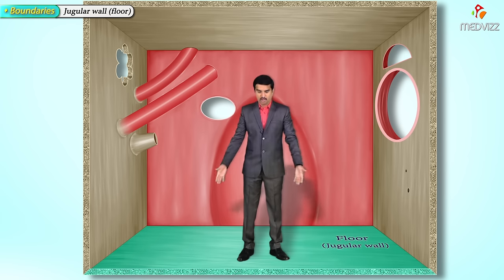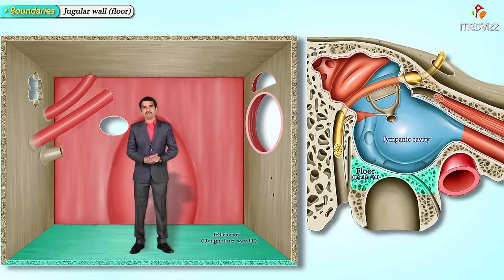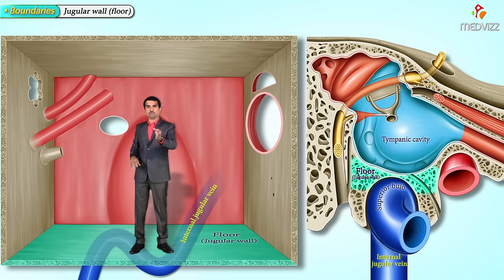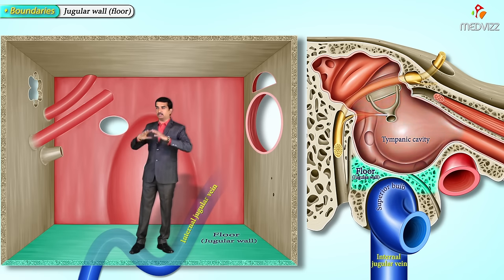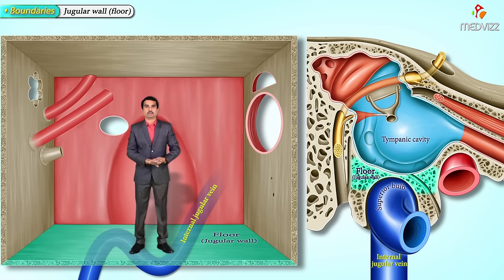The floor of the middle ear cavity is called the jugular wall. It is formed by a thin layer of bone which separates the tympanic cavity from the superior bulb of the internal jugular vein. So the internal jugular vein and the tympanic cavity are separated by this thin layer of bone called the jugular wall.